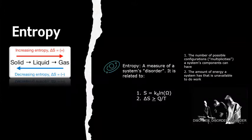Next, entropy is a measure of the system's disorder. It is related to the number of possible configurations the system's components can have, as well as the amount of energy a system has that is unavailable to do useful work. All you need to know for now is that liquids and gases have more entropy than solids of the same substance.